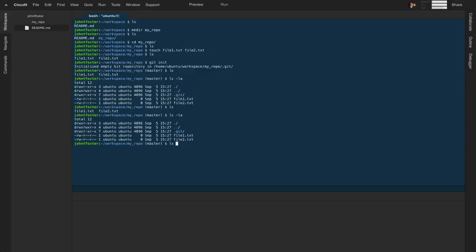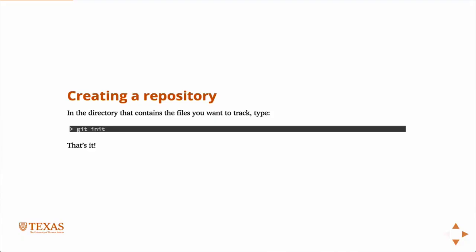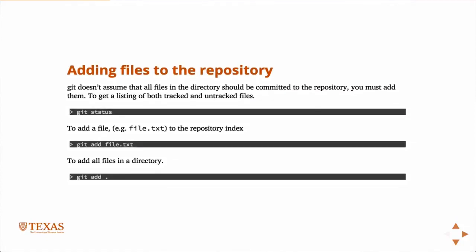If we look inside the `.git` folder, there's some information that changes as the repository changes. Now, just because there are files in the directory doesn't mean they've been added to version control. Git doesn't assume you want to track everything in the folder — and usually you don't. For example, if you have a program that produces reproducible output, you probably don't want to store that output because it takes up unnecessary space.